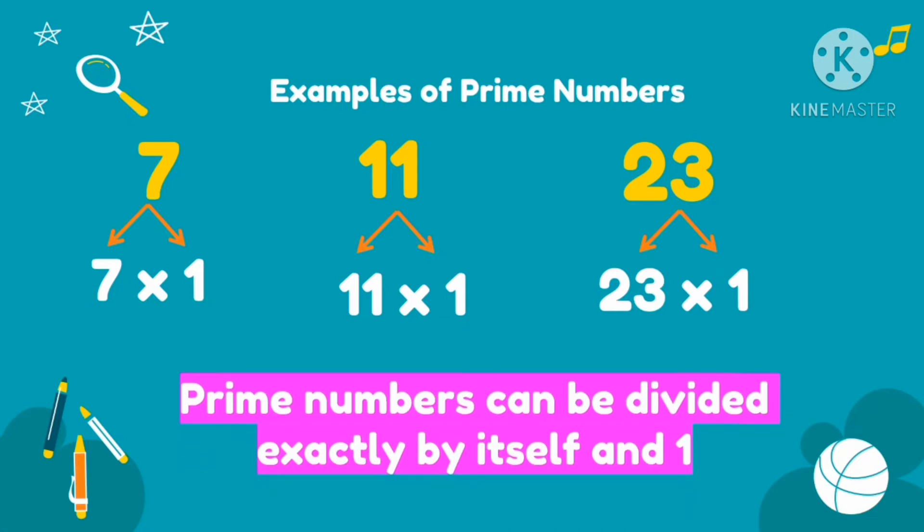So prime numbers can only be divided exactly by itself and 1. There's no other number that can divide a prime number except itself and 1.